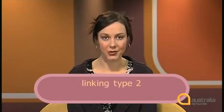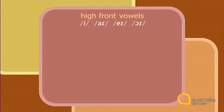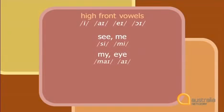Knowing when to use y and when to use w depends on the end vowel of the first word. High front vowels link with the y sound — high front vowels are ee, i, ay, oi: sounds produced with the highest part of the tongue close to the front of the mouth. For example: see, me, my, I, way, say, boy, toy.